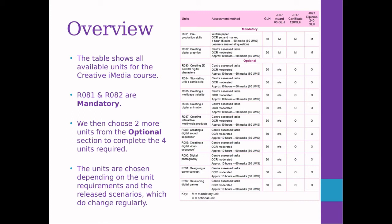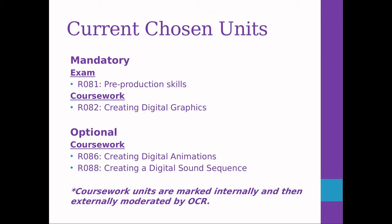R081 and R082 are mandatory — everyone has to do those. Then the school chooses two more units from the optional section to complete the four units. The school chooses them based on what devices we've got available, what software we've got available, and what suits the students we've got. Each coursework unit is approximately 10 hours of work, so it's a lot of work but you do have a time limit to complete it all.